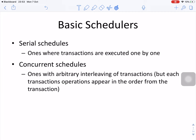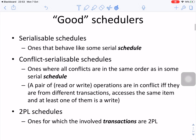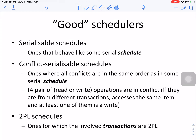The basic schedules include serial schedules, where transactions execute one by one, and concurrent schedules with arbitrary interleaving where each transaction's operations appear in order. A good schedule is a serializable schedule — one that behaves like some serial schedule. A conflict serializable schedule is one where all conflicts are in the same order as in some serial schedule.